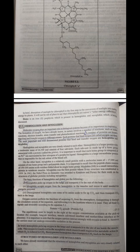Hemoglobin and myoglobin are very closely related to each other. Hemoglobin is a large protein with a molecular mass of 64,500 and consists of four subunits. Each subunit is made up of a heme group associated with a protein called the globin. It is important to recall that each heme group is composed of an Fe2+ ion surrounded by four nitrogens of a porphyrin ligand. Hemoglobin is a large intracellular protein that is responsible for the red color of blood cells. On the other hand, myoglobin is a relatively small protein with a molecular mass of nearly 17,000 and consists of one heme group and a polypeptide chain. It is important to recall that the peptide chain consists of 150 to 160 amino acid residues folded about a single heme group.